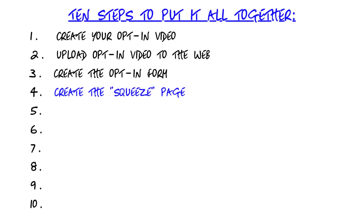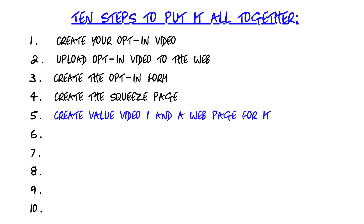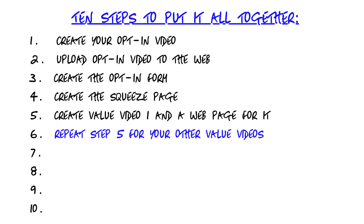Four: create the page that holds the video and the opt-in form, which is known as your squeeze page. Five: create the page where your first value video will live and create the video that sits on that page, which would be video one of your free value video series. And then step six: you would repeat step five for the other two videos in your series and your sales page.